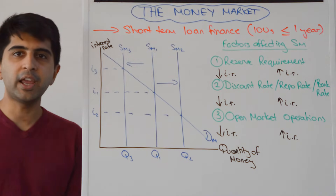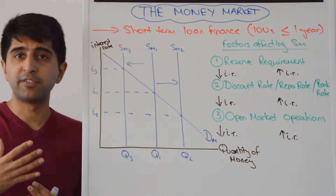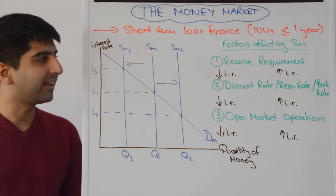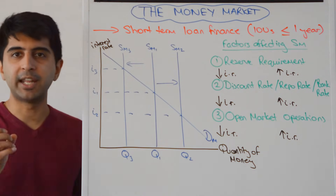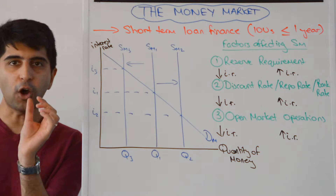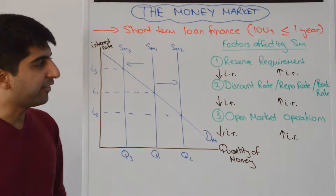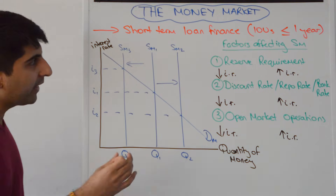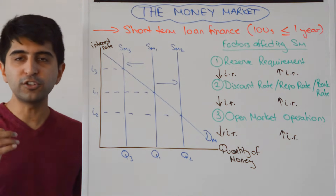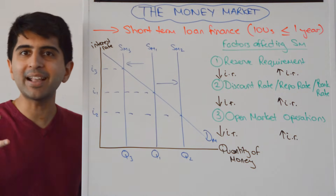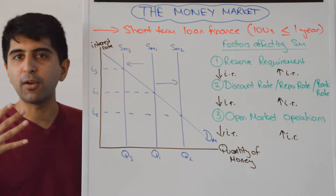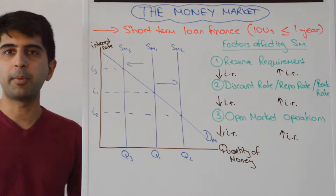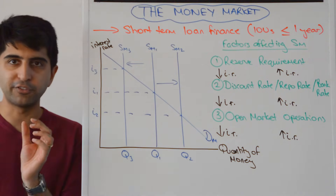So how can interest rates change in the money market? Well, the demand for money can shift — yes, that is true — but more dominant than that are changes in the supply of money, which is fixed by the central bank. The central bank can alter the supply of money and thus change interest rates, and that effect will always dominate changes in the demand for money. In that sense, the interest rate can be altered purely by the central bank — that's how they set monetary policy in order to meet their inflation target.